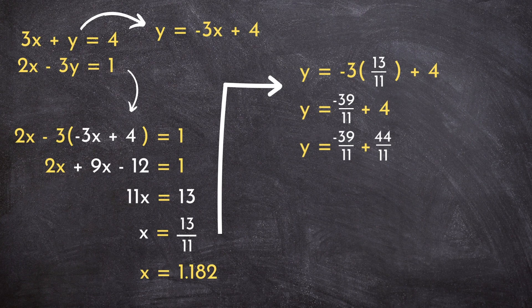4 is the same as 44 over 11. So we now have two fractions with common denominators. We can add our numerators, keeping our denominator the same, which leaves us with 5 over 11, which is another fractional y value.